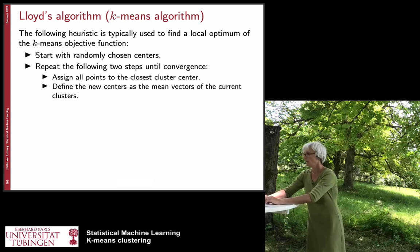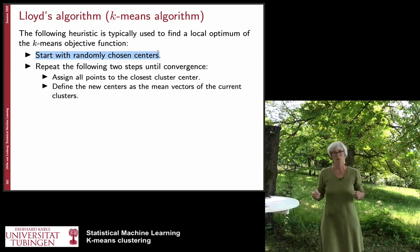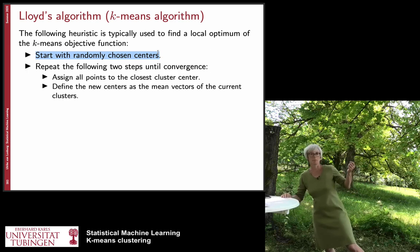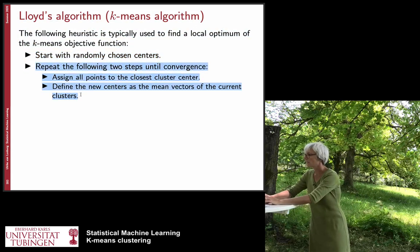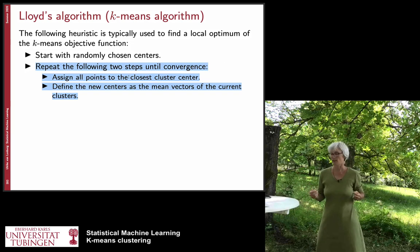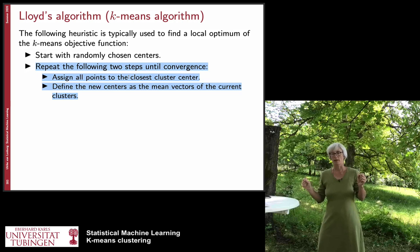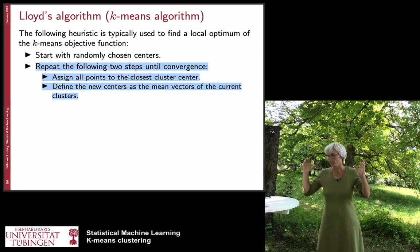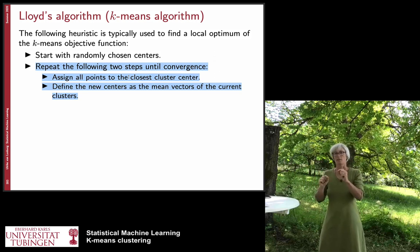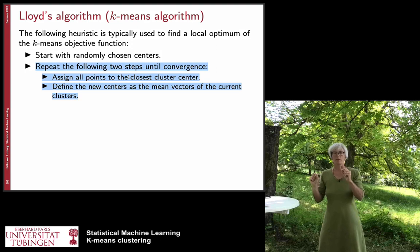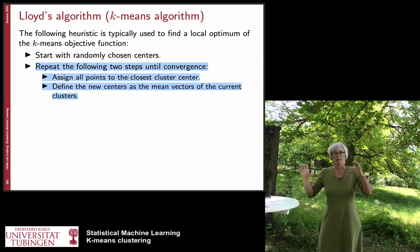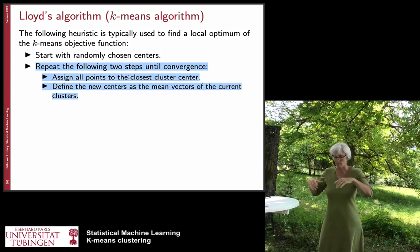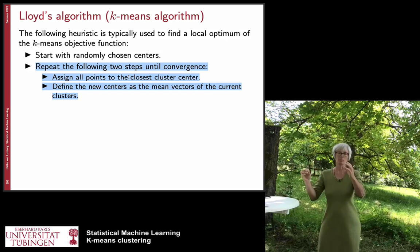The algorithm used to minimize this objective function is Lloyd's algorithm — very old, from the 1950s — a heuristic to optimize the objective as well as possible. We start with an initial set of centers, for example by randomly picking k data points from our dataset. Then there are two steps that we repeat until convergence: first, we assign each point to its closest center; then, once we have the groups, we reassign the centers by shifting them to the mean of their group.